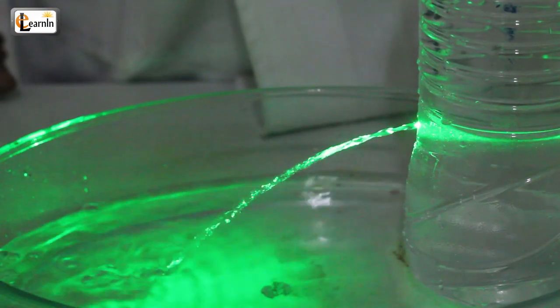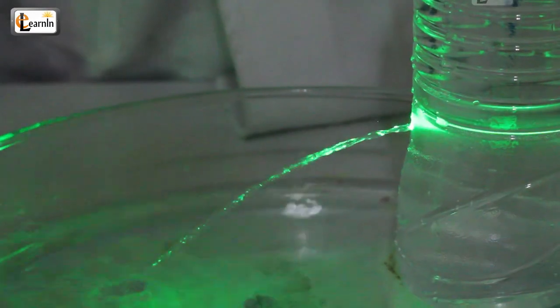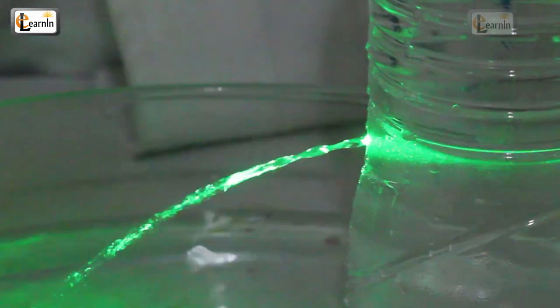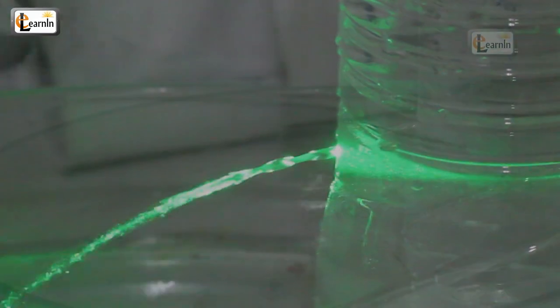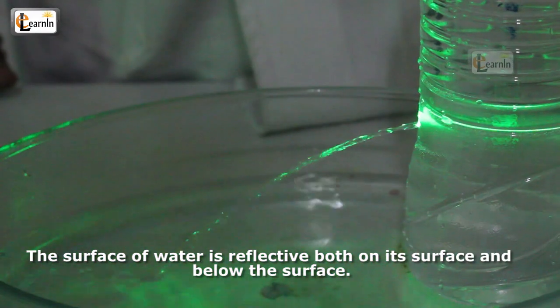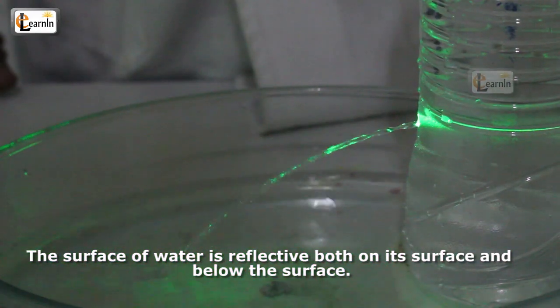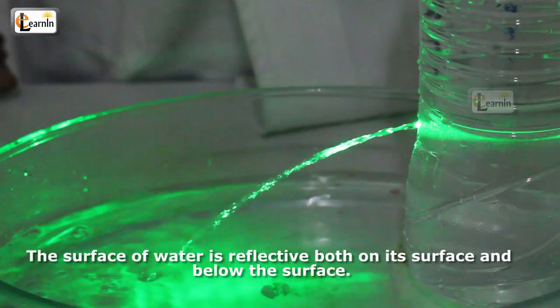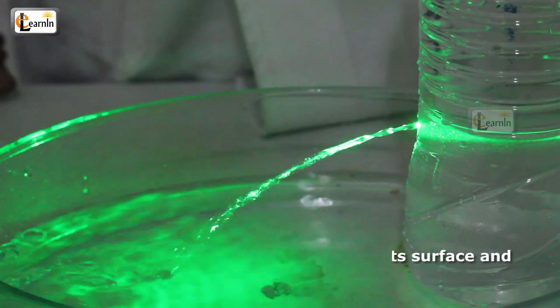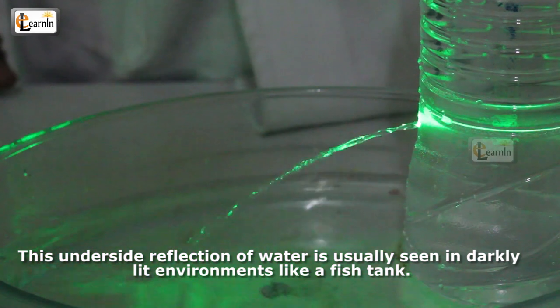When the light beam hits the water stream, the laser light gets reflected inside the stream. Remember, the surface of water is reflective both on its surface and below the surface. This underside reflection of water is usually seen in darkly lit environments like a fish tank.